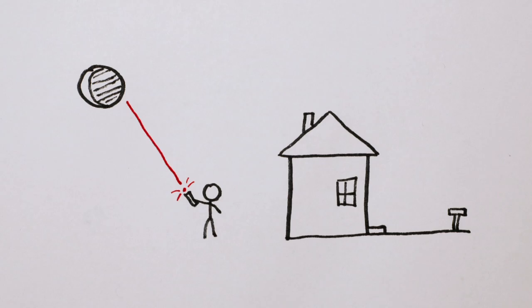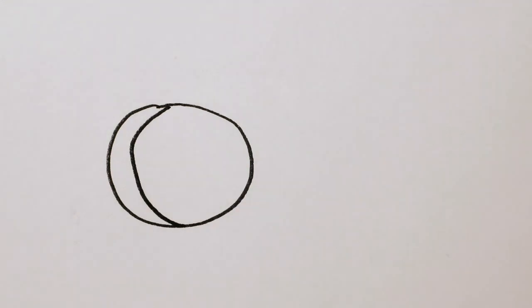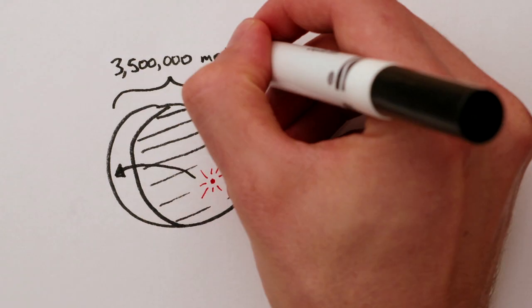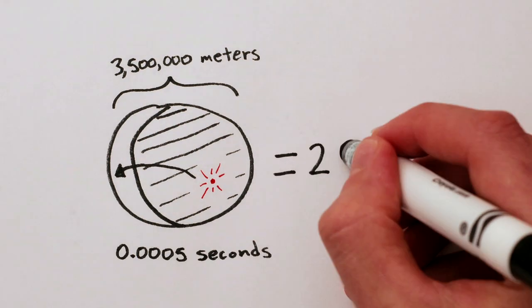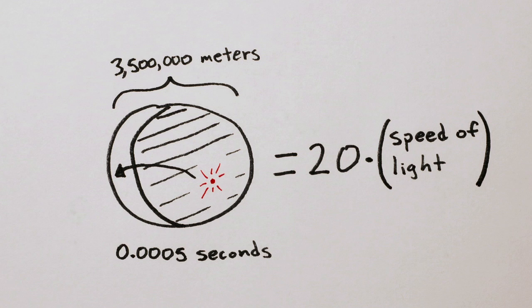All you have to do is point a laser beam at the moon and flick your wrist. The spot of light from the laser beam will travel across the moon's face in about half a millisecond, which means it's traveling at 20 times the speed of light. How is this possible?